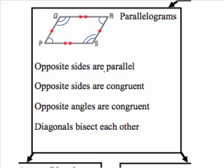Also, the diagonals will bisect each other. So if we draw a diagonal from Q to S and the diagonal from P to R, each of those diagonals will cut each other in half.